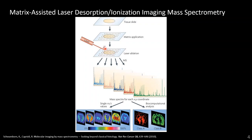This matrix enhances the ionization of different chemicals, and at each position we collect a mass spectrum. At each position we fire the laser, we get one of these mass spectra, and each mass spectrum contains hundreds to thousands of discrete molecules we can then visualize. For each one of these peaks we can recolor our tissue — where each pixel is an ablation spot — to get the distribution of hundreds to thousands of different chemicals. We can then perform multivariate statistical analyses to distribute them into classes.